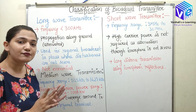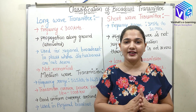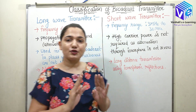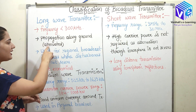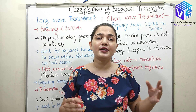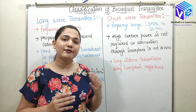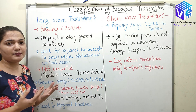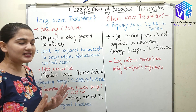The long wave signal is propagated along the ground. When the wave propagates along the ground, there is large attenuation due to friction of the ground. Because of this large attenuation, the signal cannot travel a long distance and will fade out. So we need to use a large number of repeaters in the case of the long wave transmitter, making it not economical.